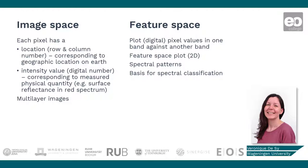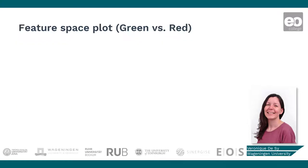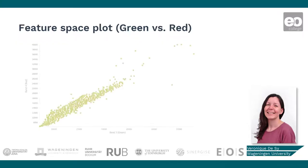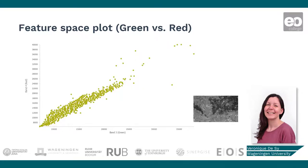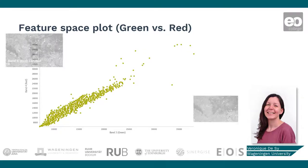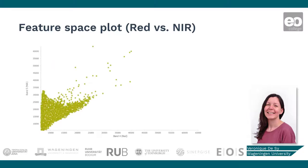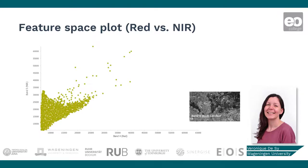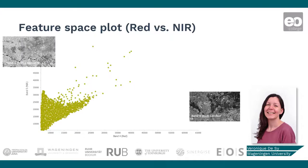While we often only show two dimensions or bands in the feature space plot, we can perform the spectral classification using multiple dimensions or bands. Going back to our Landsat 8 example, here I have made a feature space plot where the pixel values of band 3, the green reflectance, are plotted against the pixel values of band 4, the red reflectance, and also against the pixel values of band 5, the near-infrared reflectance, showing very different spectral patterns.